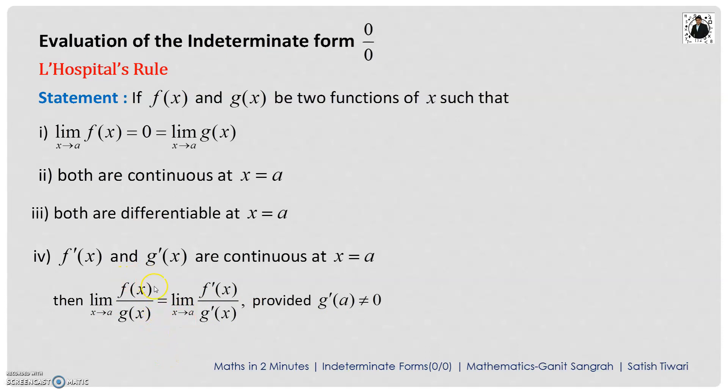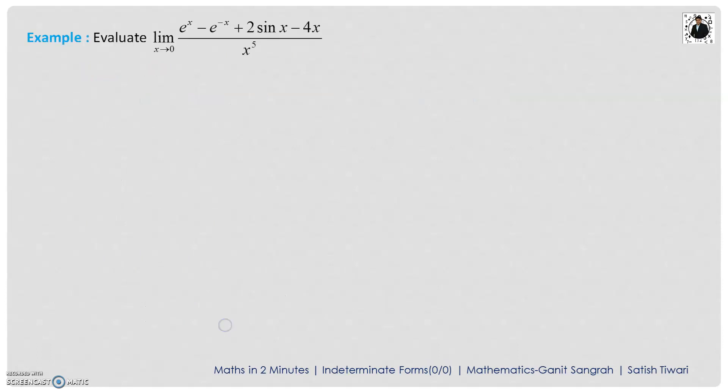We are just differentiating the numerator and the denominator separately. I am writing here. Now, let us see the example. What is the example? Now, the example is evaluate limit extending to 0 of this function. If I put the 0 here, what is it?